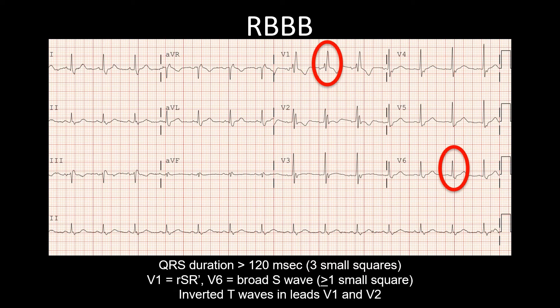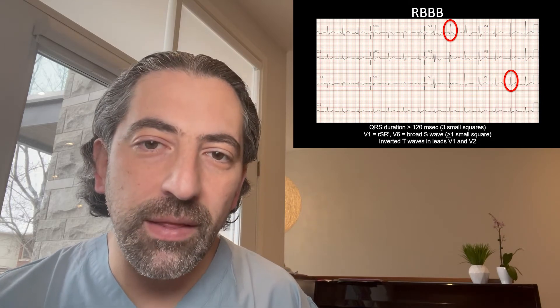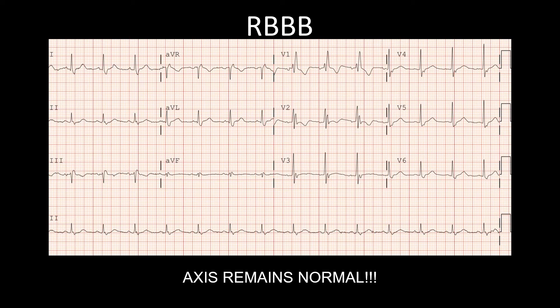Here are the criteria for right bundle branch block. The QRS duration is more than 120 milliseconds, which is three small squares. In V1 you have an RSR prime complex. In V6 you have a broad s wave which is more than or equal to one small square. Because depolarization of the right ventricle is happening through muscle tissue rather than through the His-Purkinje system, repolarization creates an abnormal T wave, and it's common to see an inverted T wave in leads V1 and V2. Of note, because the major vectors of depolarization are still determined by the left ventricle, the axis remains normal — between minus 30 and plus 90 degrees — and we see that because lead 1 and lead 2 are still positive.